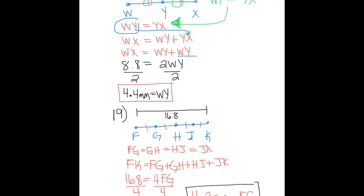Number 19: Same thing—those congruent marks, those segment marks, represent congruence, those little red lines. So I find out that FG equals 4.2 centimeters.